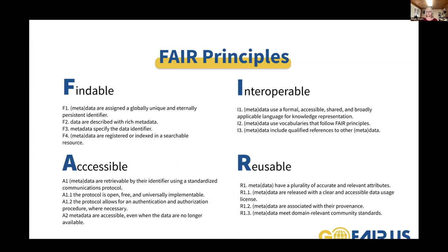The ultimate goal of FAIR is to optimize the reuse of data. To achieve this, metadata and data should be well described so that they can be replicated or combined in different settings. For example, to be accessible, metadata are retrieved by their identifier using a standardized communication protocol that is open, free and universally implementable. To be reusable, metadata and data are released with a clear and accessible data usage license.